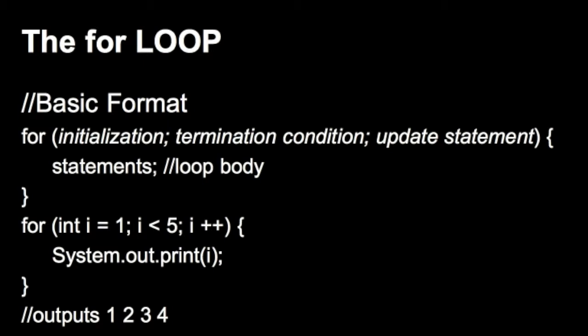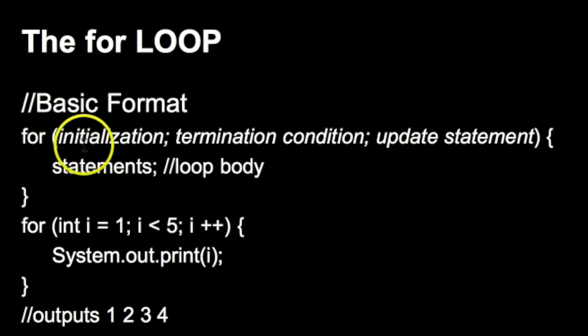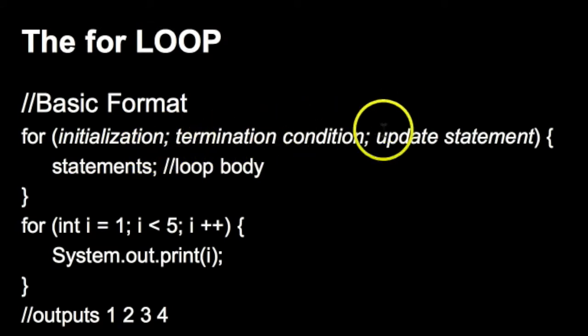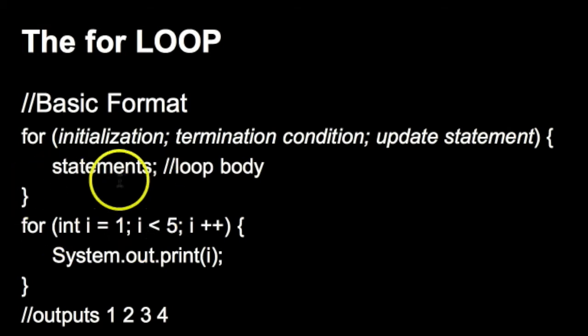What a for loop allows us to do is to execute a block of code a repeated number of times — that's why it's called a loop — and we as the programmer are able to set how many times that block of code is executed. The basic format is as follows: we have our identifier 'for' with inside parentheses our initialization statement, semicolon, a termination condition, semicolon, and an update statement, with opening and closing braces and our statements in between, which is generally called our loop body.